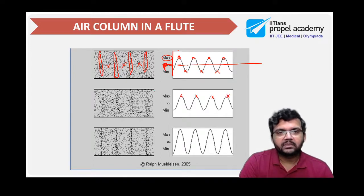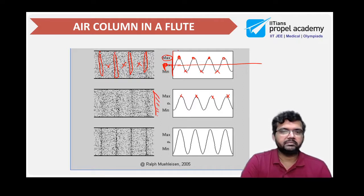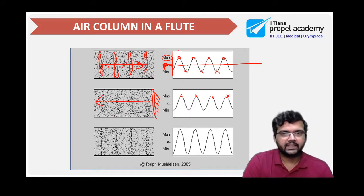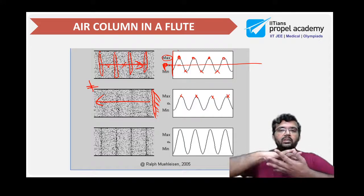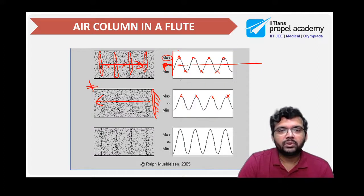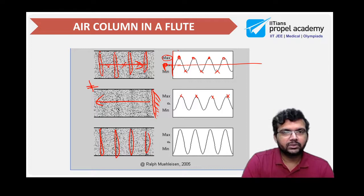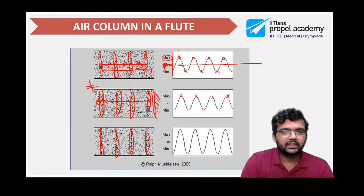If this wave is bounced back from a hard surface, now these two waves — the one which is moving forward, the other one moving in the other direction — these two will superimpose on each other. When these two waves superimpose on each other, then what we have is a stationary wave. This is a compression caused by the superimposition of two waves — the one moving forward and the one moving in the opposite direction.